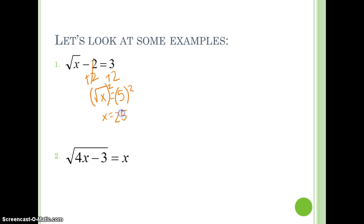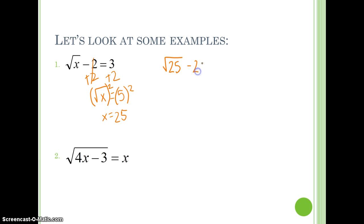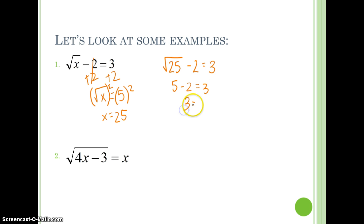Remember, you always have to plug it back in and check for extraneous solutions. So we'll come back to our original equation and plug in 25 for x. So the square root of 25 minus 2 equals 3. The square root of 25 is 5. 5 minus 2 is 3, so 3 equals 3. So that solution works.